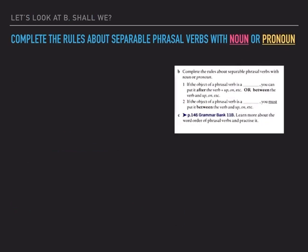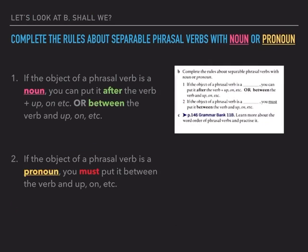Now let's look at exercise B. Complete the rules about separable phrasal verbs with 'noun' or 'pronoun'. Number one: if the object of a phrasal verb is a noun, you can put it after the verb plus up, on, etc., or you can put it between the verb and up, on, etc. If the object is a pronoun, you must put it between the verb and up, on, etc. So when I have a pronoun and it is a separable phrasal verb, I must separate and put the object pronoun between the verb and up, on, away, back, etc.